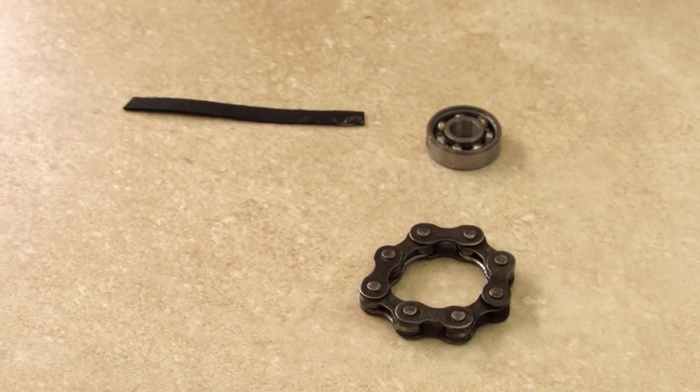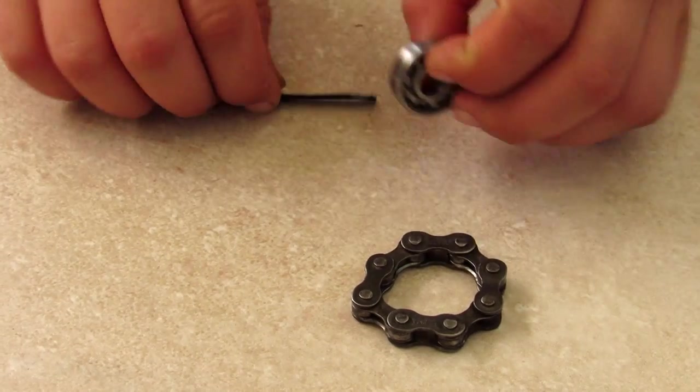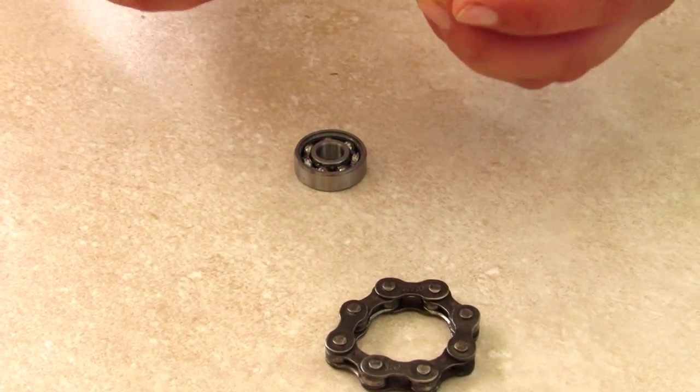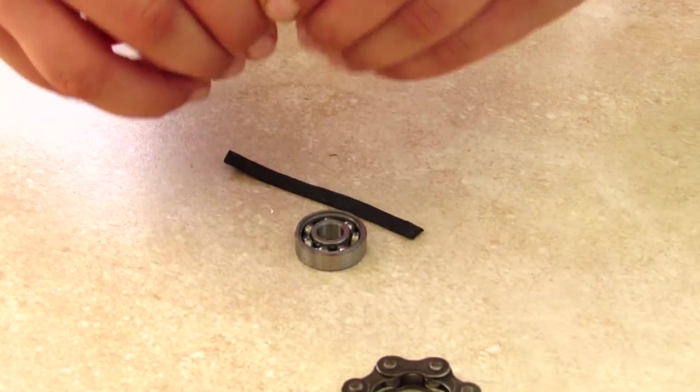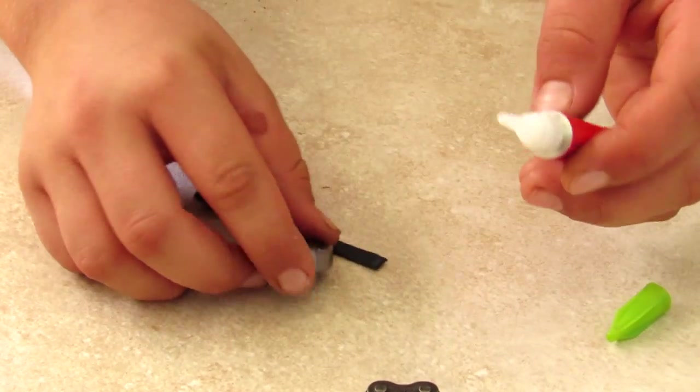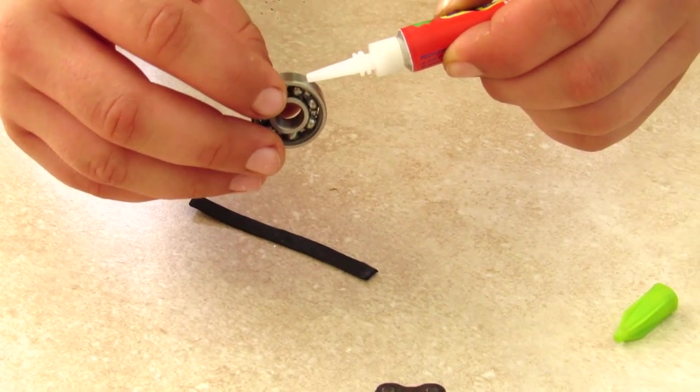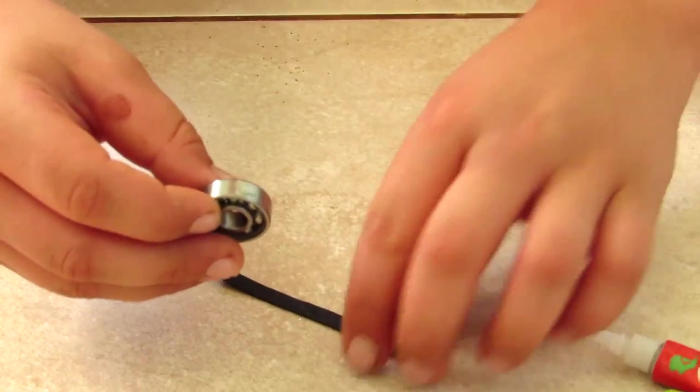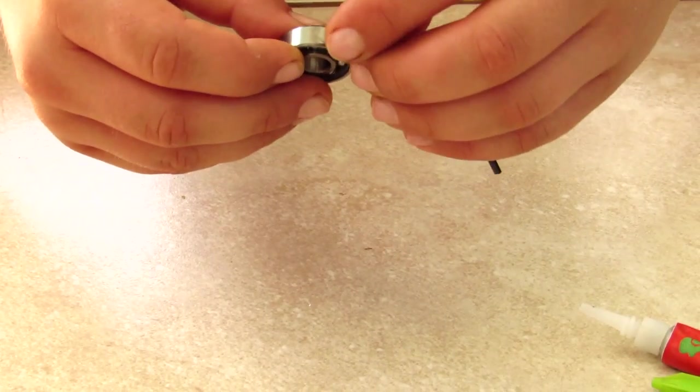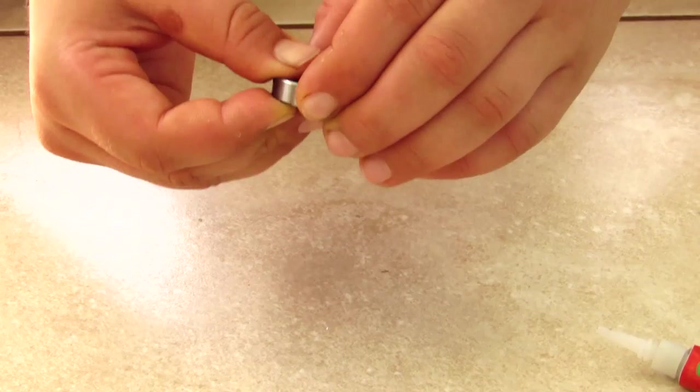The next step, you have to take your rubber that I showed in the beginning of the video. You're gonna need some of your super glue. You're gonna put glue on the edge of the bearing like that, and then you're gonna put your rubber onto the bearing.